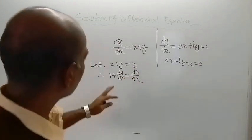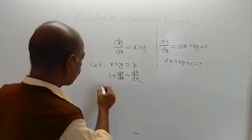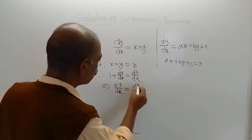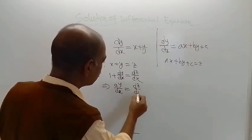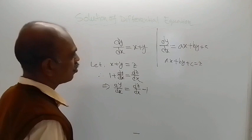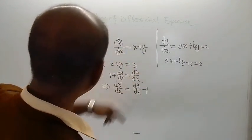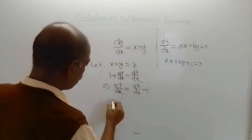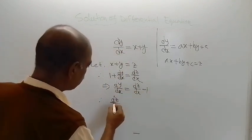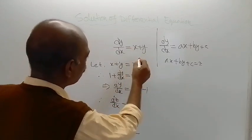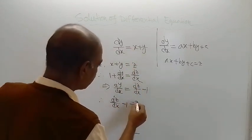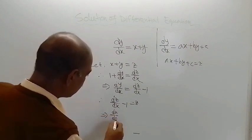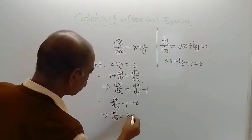From here, what we are getting is dy/dx is equal to dz/dx minus 1. Then this can be written as dz/dx minus 1 equals x plus y, that is equal to z. So in the next step, we can write dz/dx is equal to z plus 1.